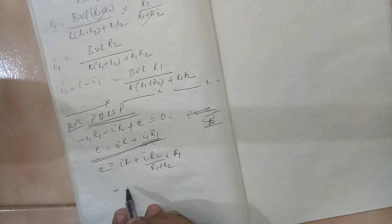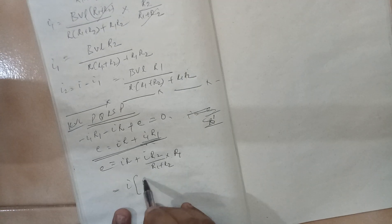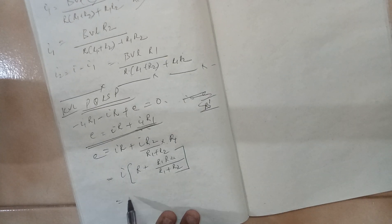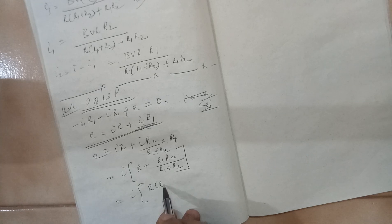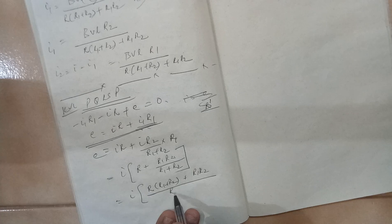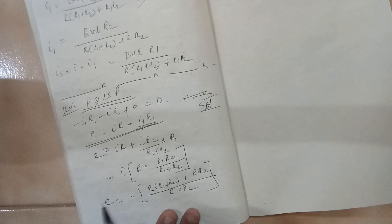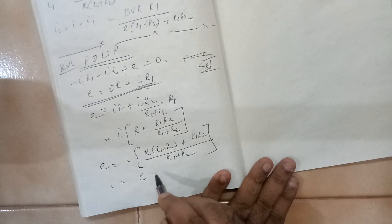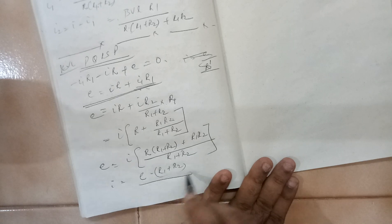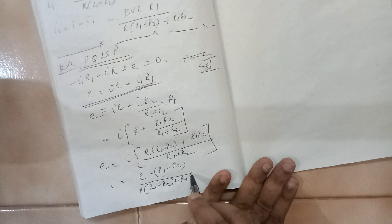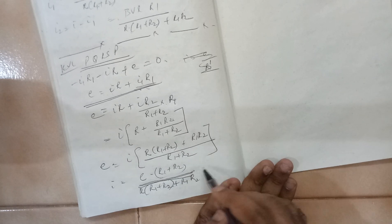This is what it is, so we can take I common. We are getting R plus R1 R2 divided by R1 plus R2, which is I equals R into R1 plus R2 plus R1 R2 divided by R1 plus R2. So what is the value of I? Here we have got E into R1 plus R2 divided by R into R1 plus R2 plus R1 R2. This is what we have achieved.